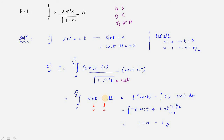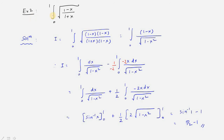Apply the UV rule (IBP). Using ILATE: t is algebraic so u = t; sin(t) is v. This gives [t·(−cos t)] − integral(1·(−cos t)) dt = −t·cos(t) + sin(t). Substituting limits 0 to π/2: upper limit gives −(π/2)·cos(π/2) + sin(π/2) = 0 + 1 = 1; lower limit gives 0. The answer is 1.